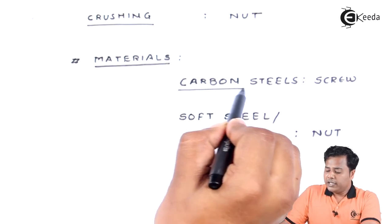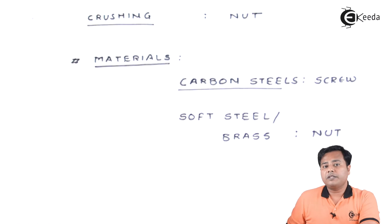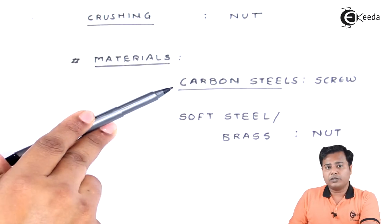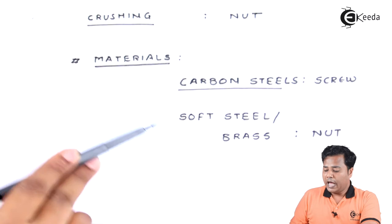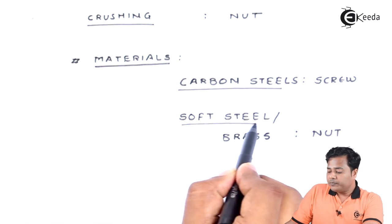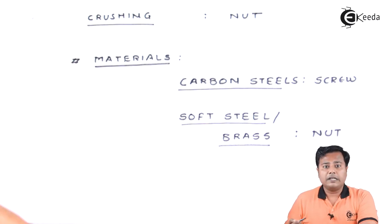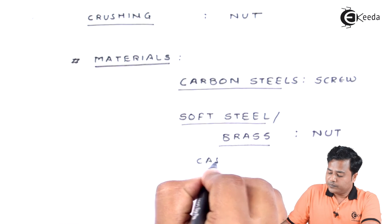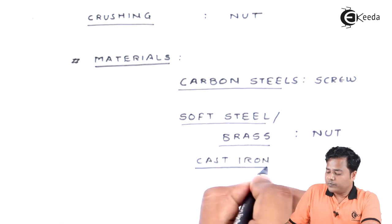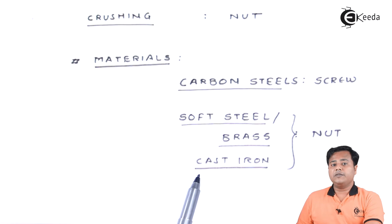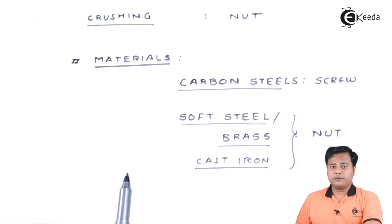There are basically predefined materials specified by different industries. Generally, carbon steels are used for the screw and soft steel or brass is used for the nut. In many cases, depending upon application, some use cast iron as well. These are the specified materials which we need to consider for the design aspects.